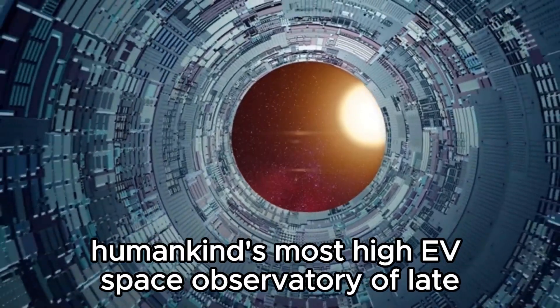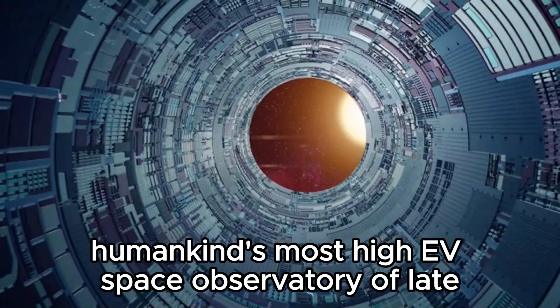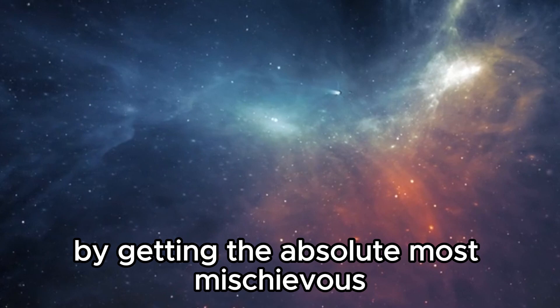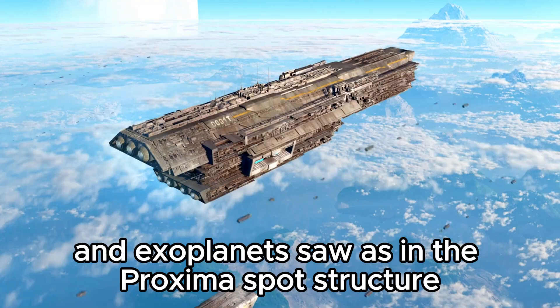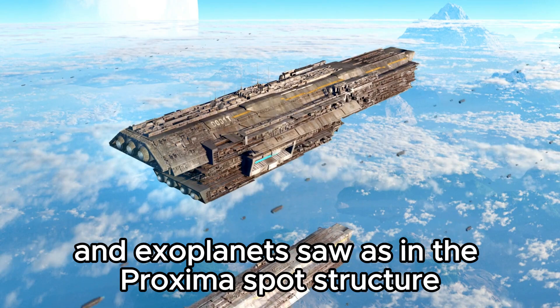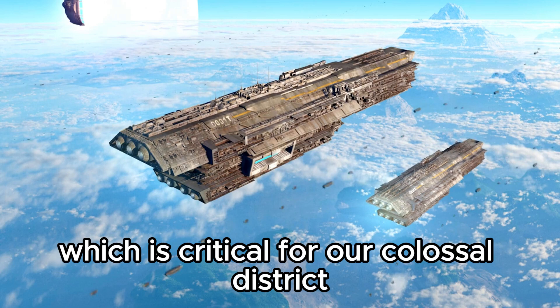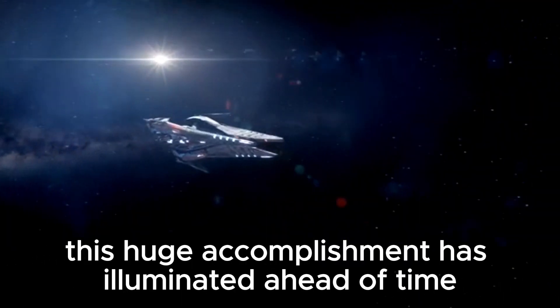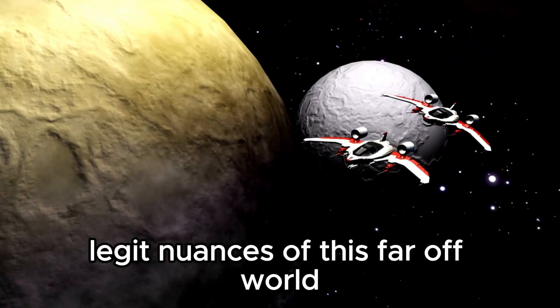The James Webb Telescope, humankind's most advanced space observatory, recently accomplished a remarkable achievement by capturing the most detailed image to date of Proxima B, an exoplanet located in the Proxima Centauri system within our galactic neighborhood.